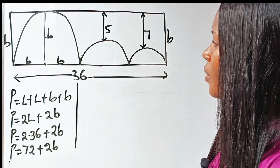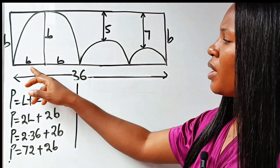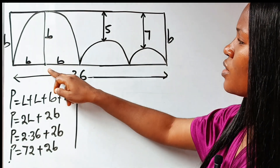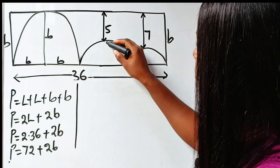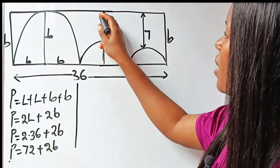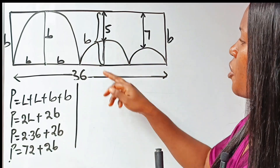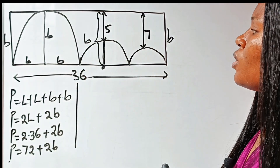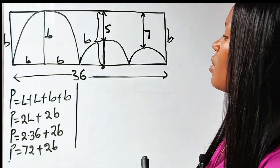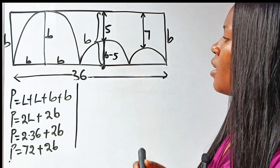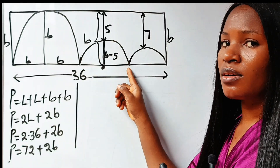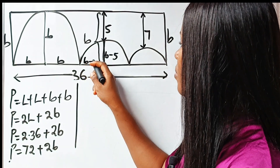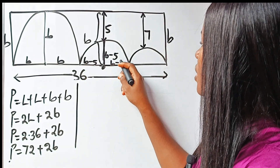So this is what we have now. This is B and this is B. From here to here should be equal to from here to here, so from here to here is also B. So if from here to this point is B, the remaining part — from here to here, which is the radius of this semicircle — should be equal to B minus 5. So here is B minus 5, and from here to here is also B minus 5. This side is also B minus 5.